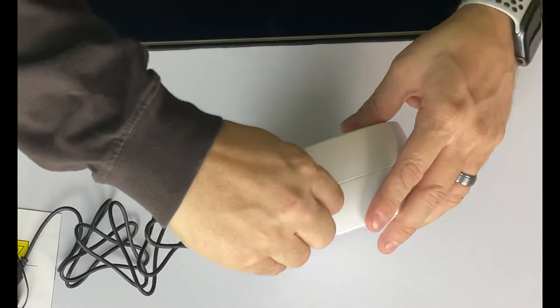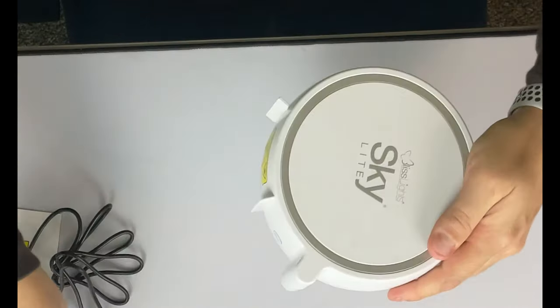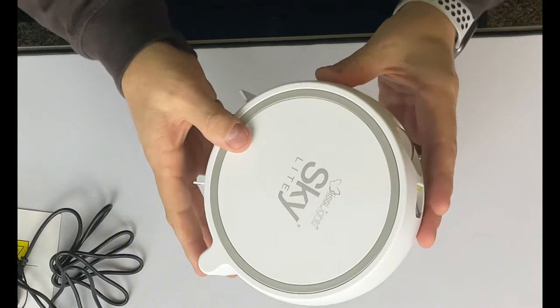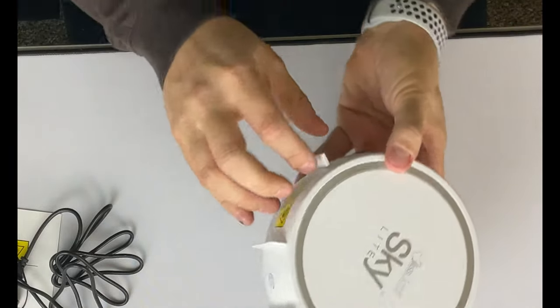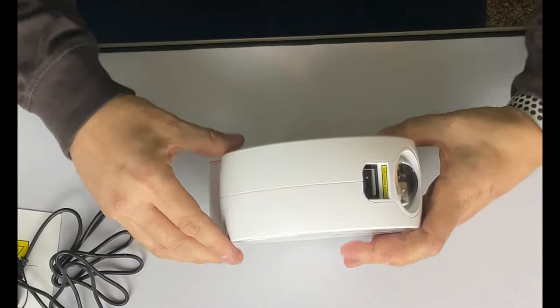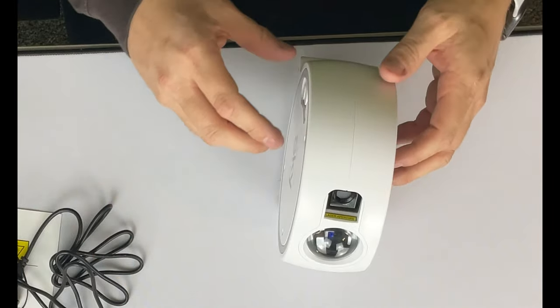So that plugs in just fine right like that. And on top it just says Blissful Lights, Skylight. There is a little stand. You can see the stand right here. So you can stand it up like this to project it up at the ceiling.